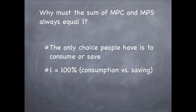Why must the sum of MPC and MPS always equal 1? The only choice people have is to consume or save, so 1 equals 100% — consumption versus savings.